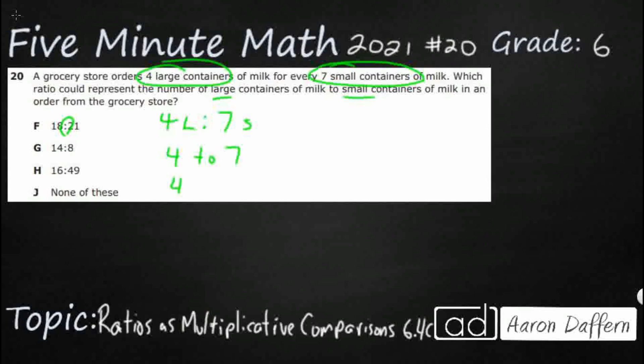What we're going to do is we need to find a ratio that could represent an equivalent fraction to these. So what we're looking at is 4/7ths and does it equal either 18/21, 14 over 8, or 16 over 49. So let's just look at it like this. Let's start with this first one, 18 over 21.